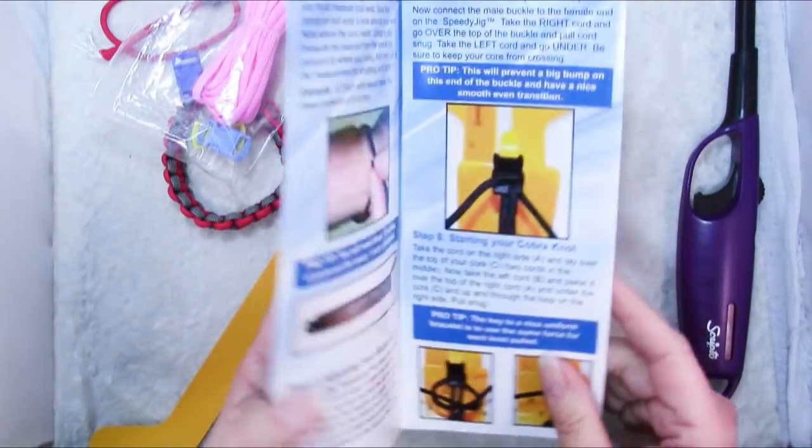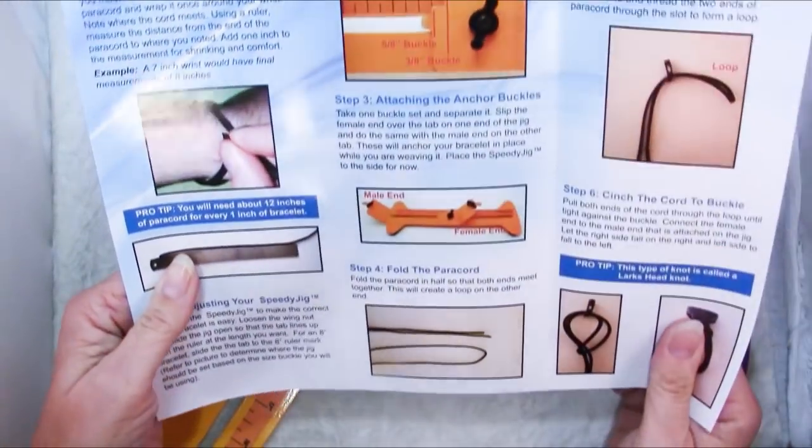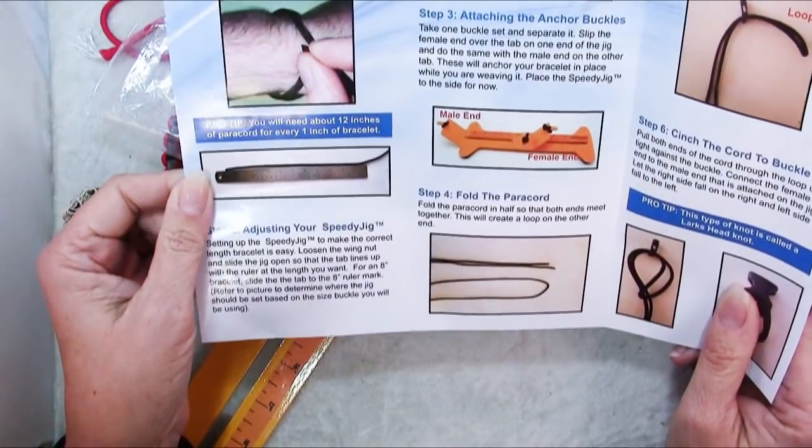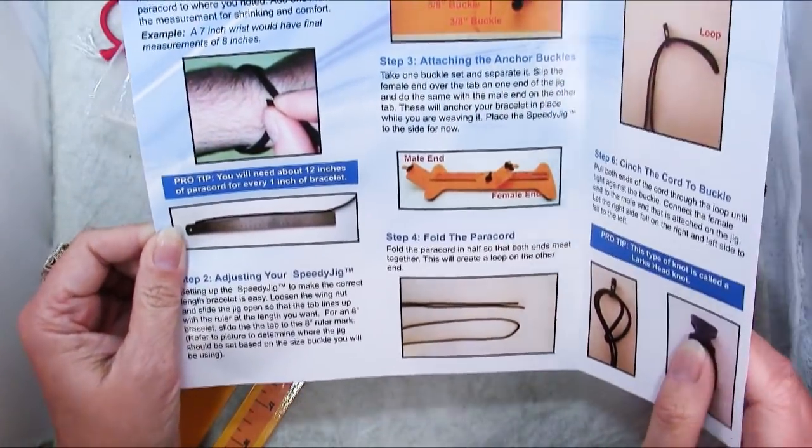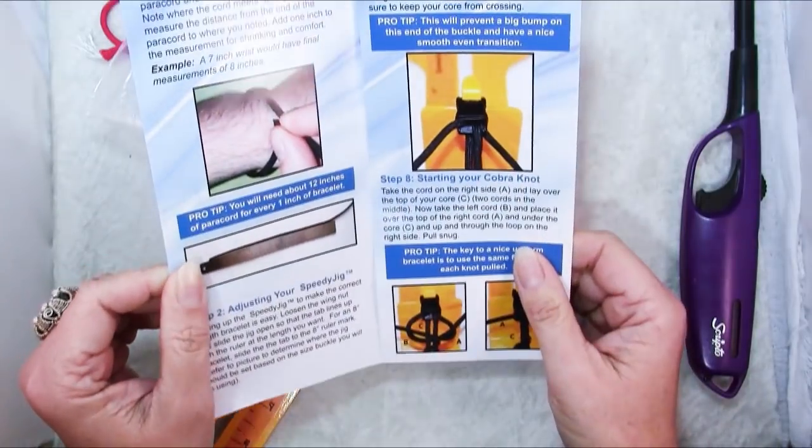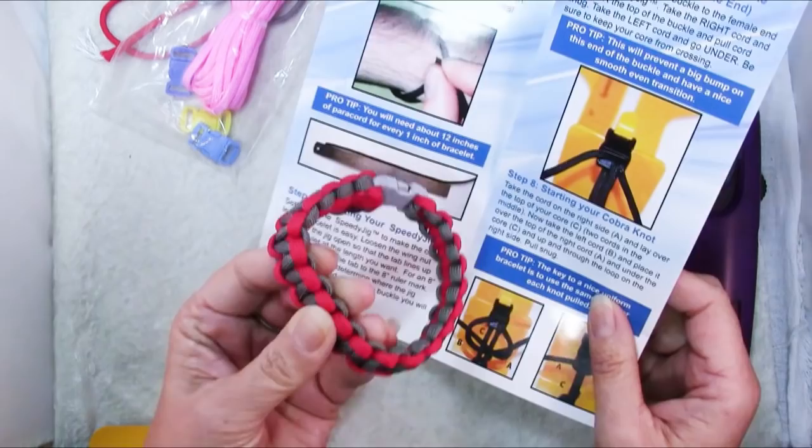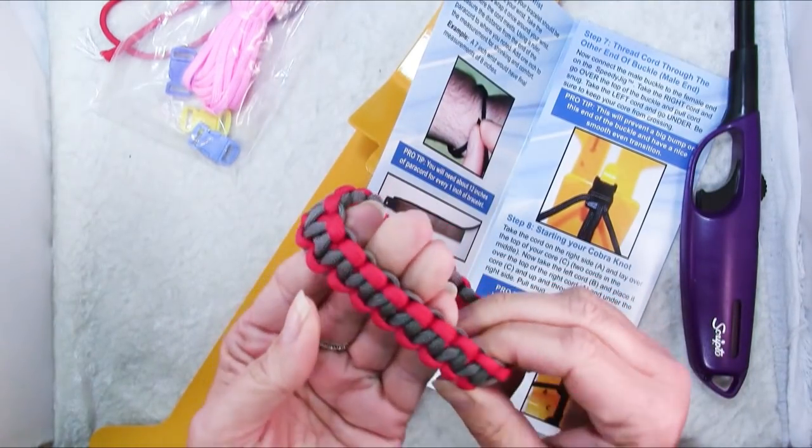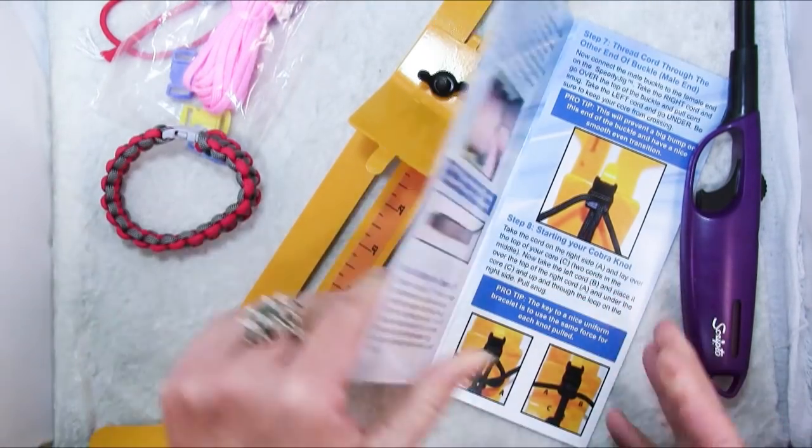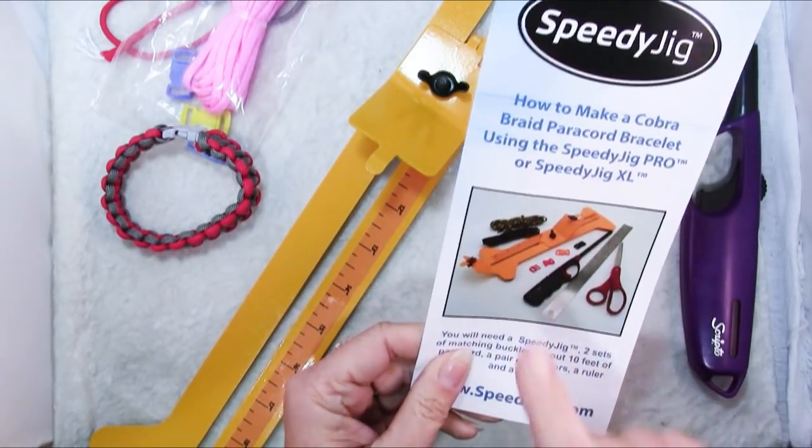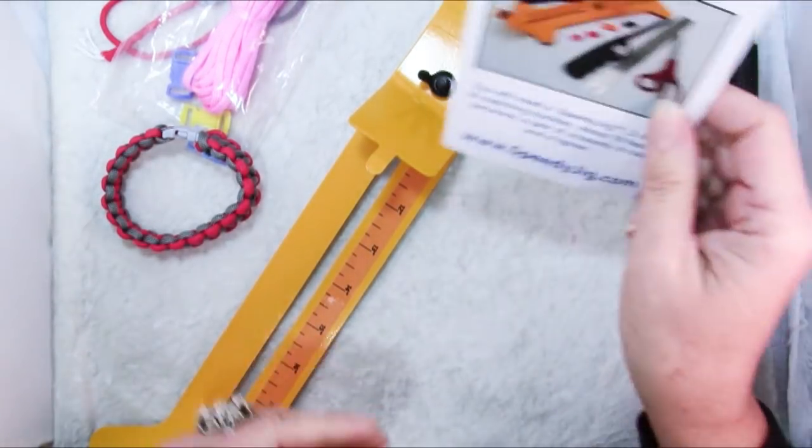You also get a book of instructions which I found a little confusing to begin with. I had to go online. I found a YouTube video explaining how to make a cobra knot bracelet, which is what this is. I then found an instructable explaining how to do the two color, and then it wasn't until I looked at the SpeedyJig website that I figured out something that was perplexing to me.